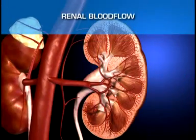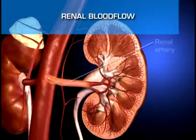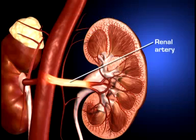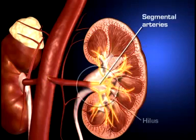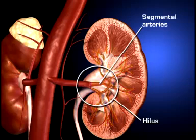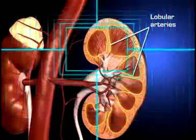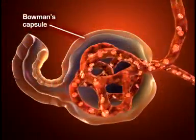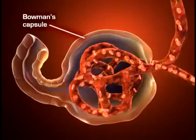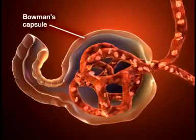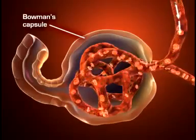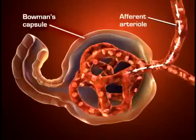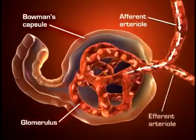Each kidney is supplied with blood by a single renal artery that arises on its respective side of the aorta before dividing into five segmental arteries that enter the hilus. Within the kidney, each segmental artery branches into several lobular arteries. The lobular arteries further subdivide to form interlobular arteries, which branch off into afferent arterioles. Blood flows into the glomeruli through the afferent arterioles, and out of the glomerulus through the efferent arteriole.